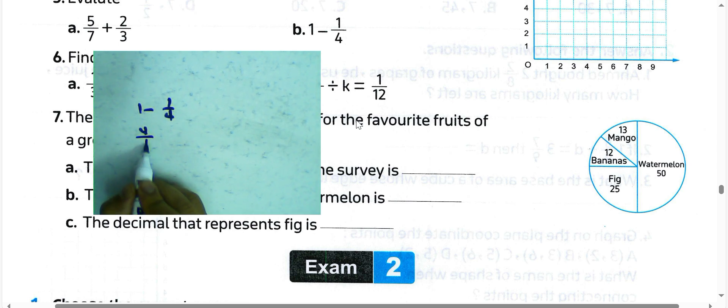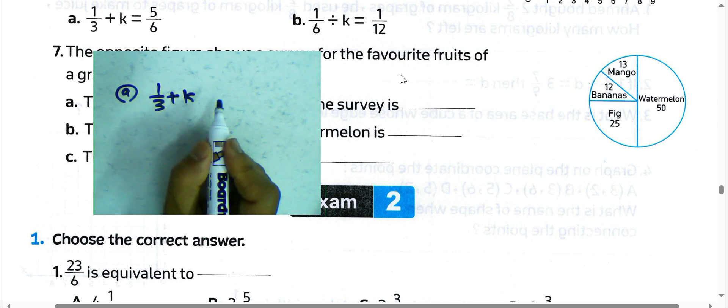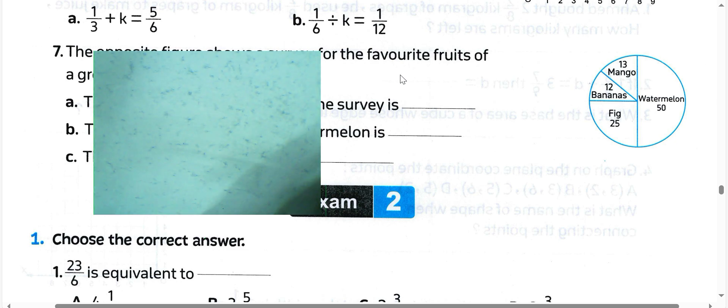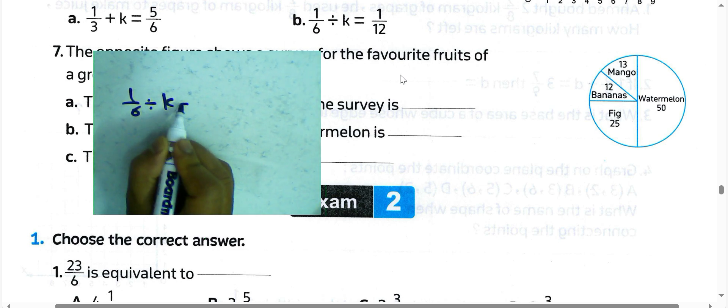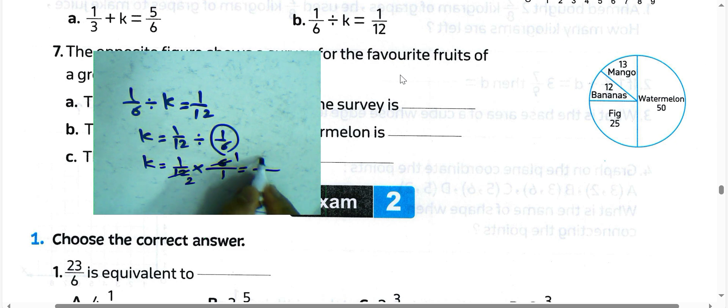1 subtract 1/4: write 4/4 subtract 1/4, which equals 3/4. Find the value of k: 1/3 plus k equals 5/6. k equals 5/6 subtract 1/3, which equals 3/6, simplified to 1/2. For 1/6 divided by k equals 1/12, we find k by writing 1/12 times 6/1, which equals 1/2.